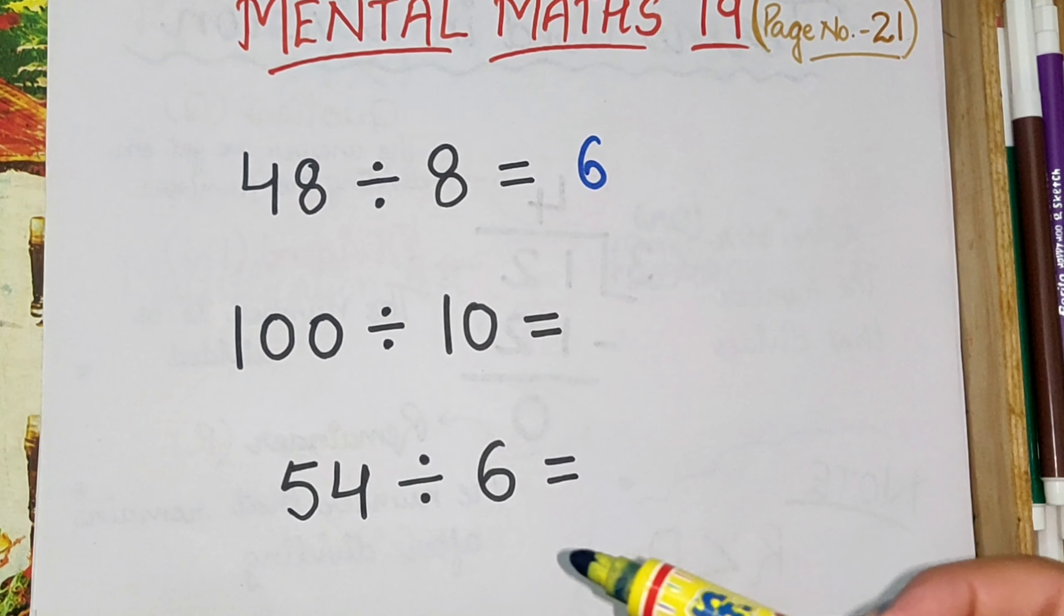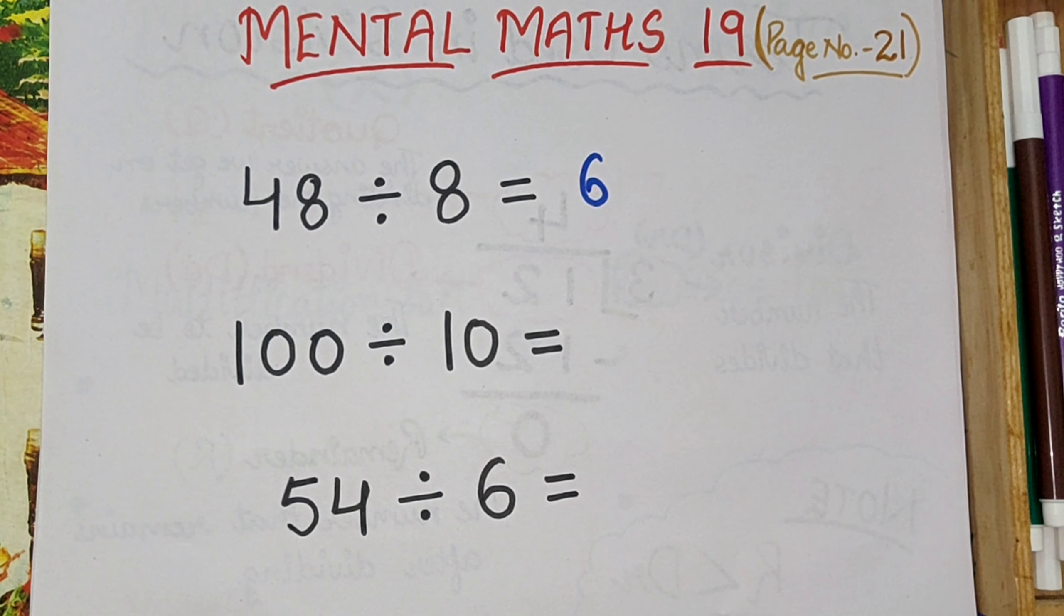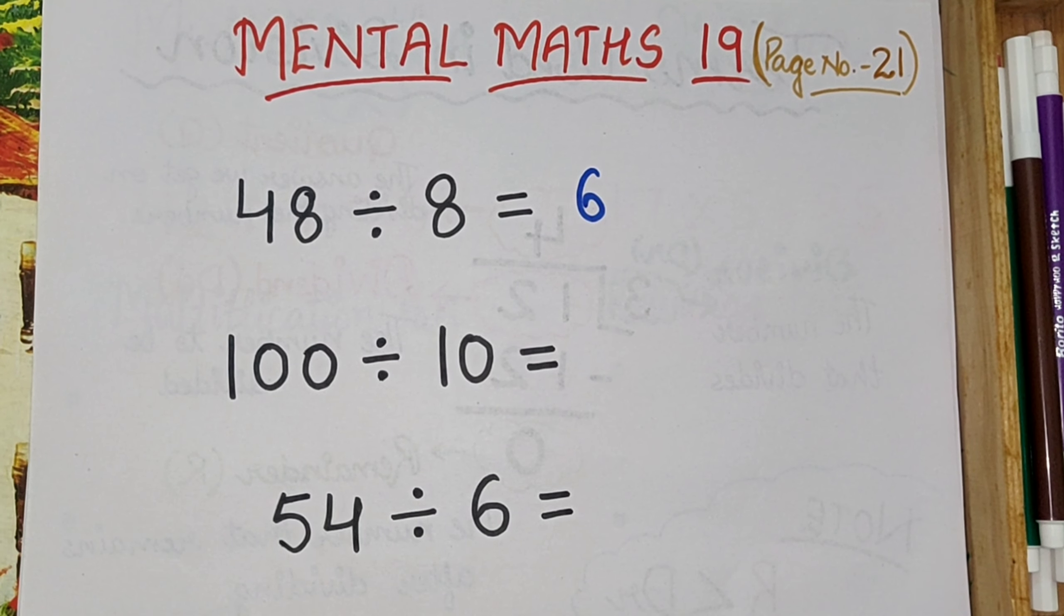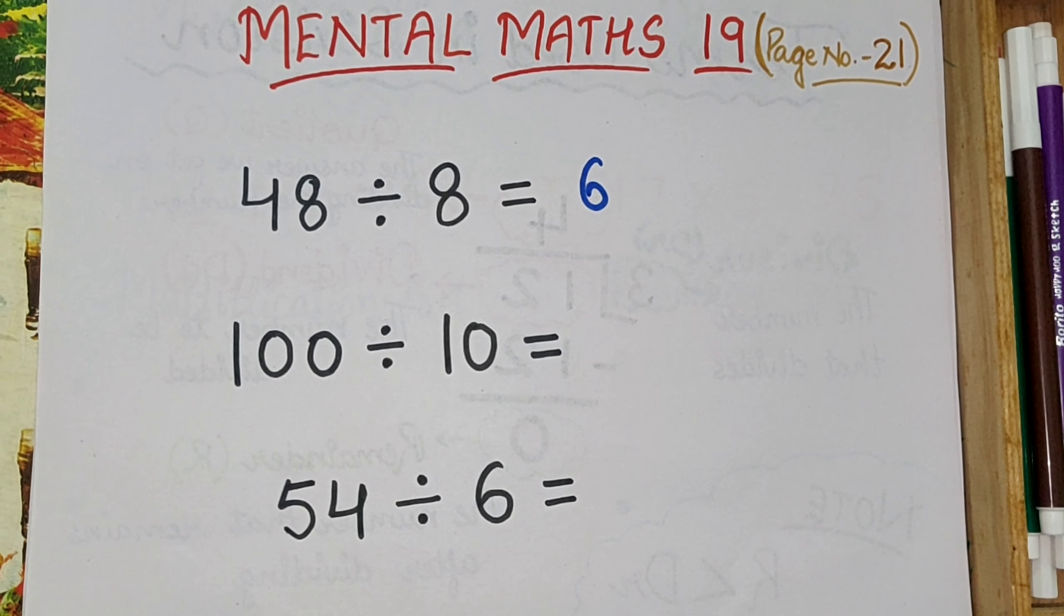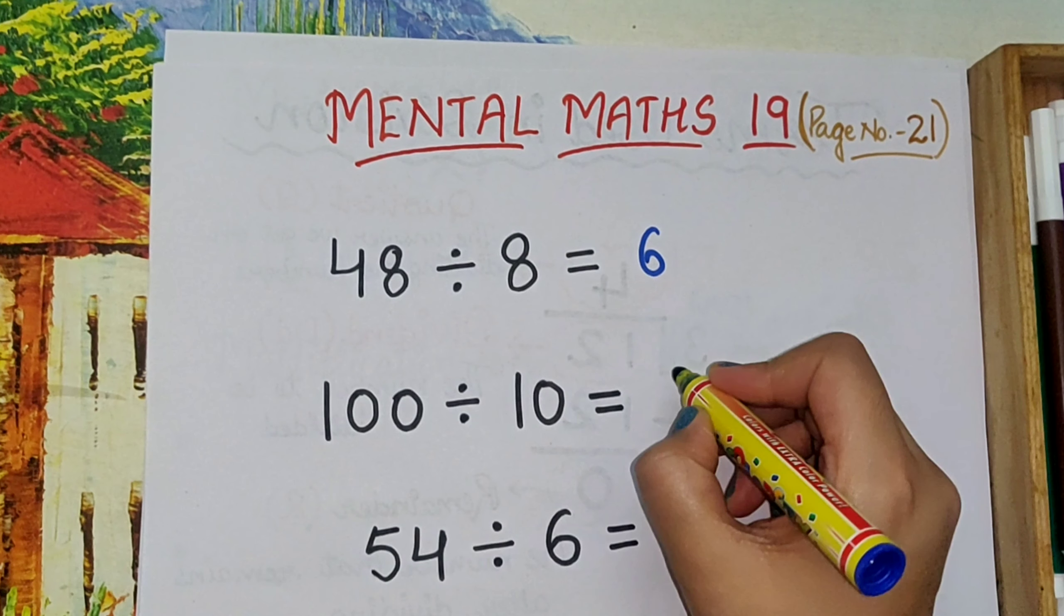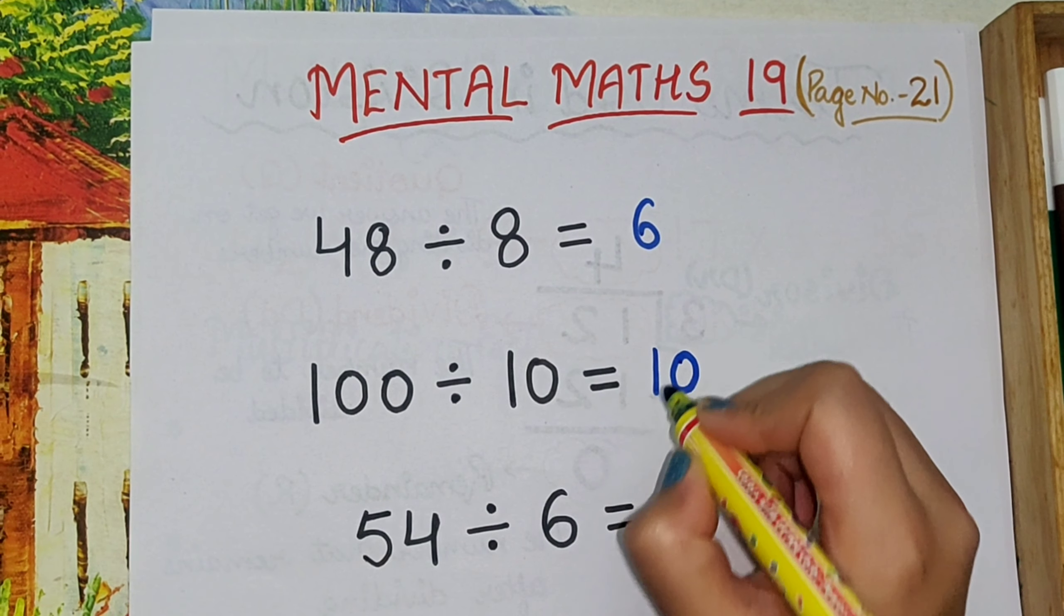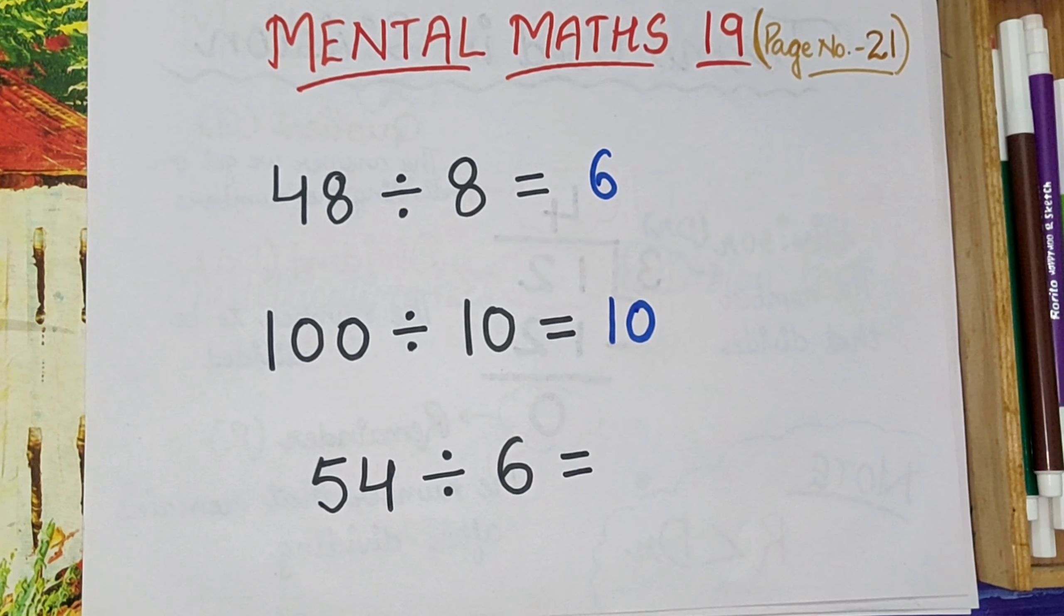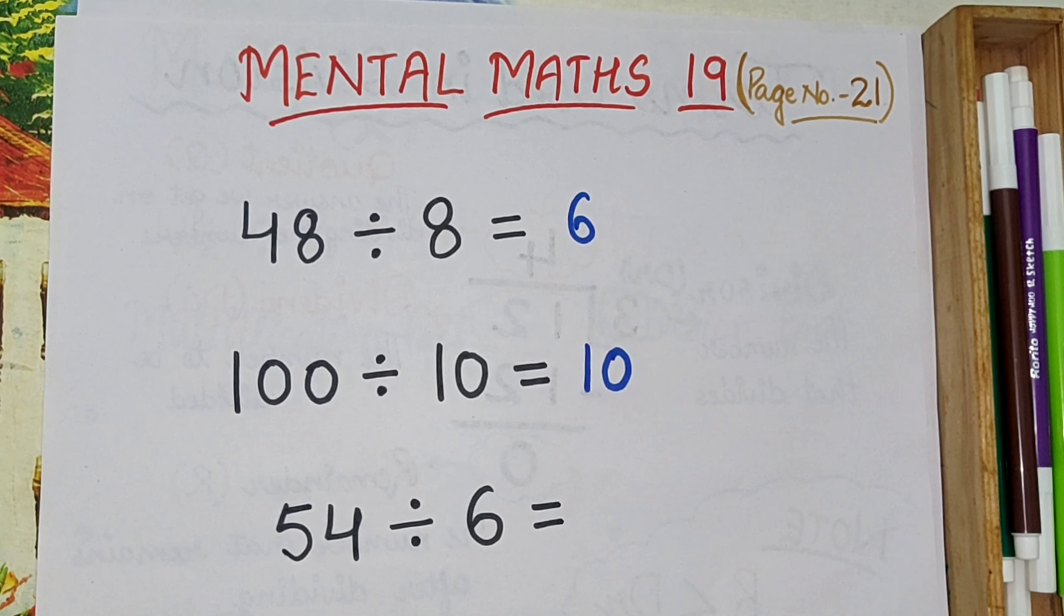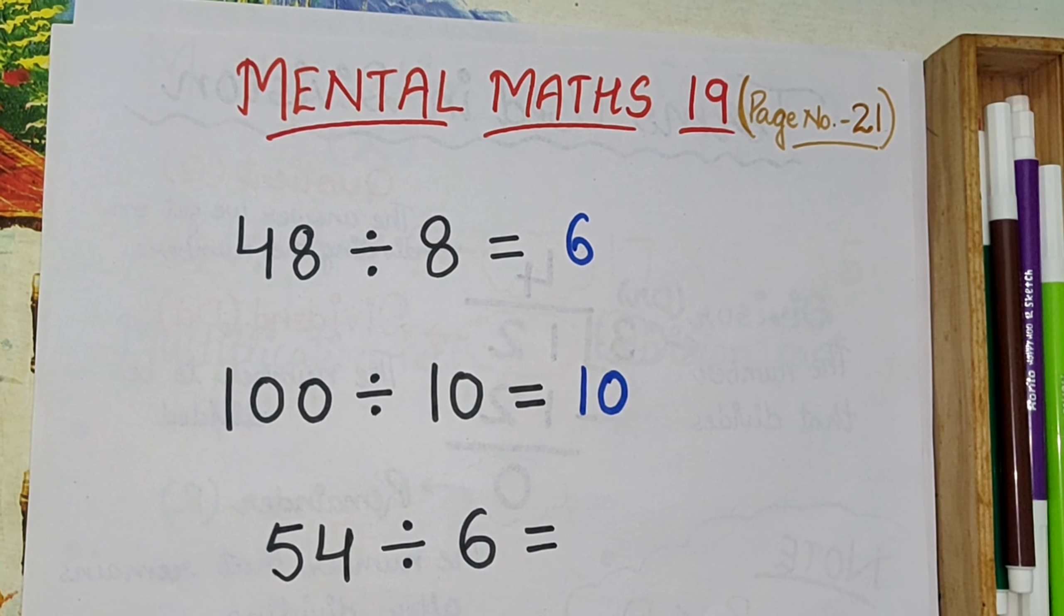Next is 100 divided by 10. Now again, everybody has learned table of 10, right? So can you answer me? Very good, so here answer is 10. Now next one is 54 is divided by 6. Very good, here answer is 9.